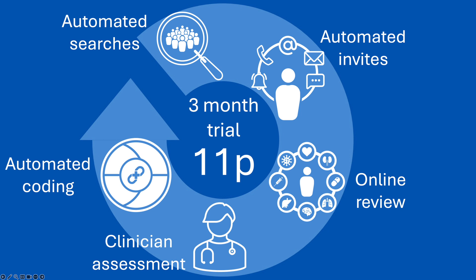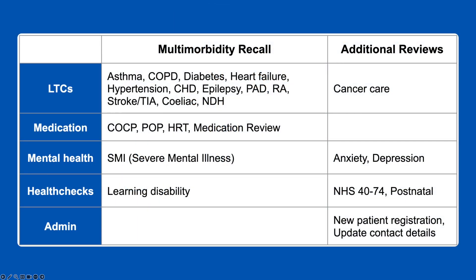Start Medlink automated recall with a free three-month trial, then pay only 11p per patient annual subscription. In each patient's month of birth, we analyse their record to identify all conditions requiring review, along with necessary blood tests and foot checks.